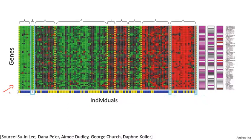This is unsupervised learning because we're not telling the algorithm in advance that these are type 1 people, those are type 2 persons, those are type 3 persons, and so on. Instead, what we're saying is: here's a bunch of data. I don't know what's in this data. I don't know who's in what type. I don't even know what the different types of people are. But can you automatically find structure in the data for me? Because we're not giving the algorithm the right answer for the examples in our data set, this is unsupervised learning.